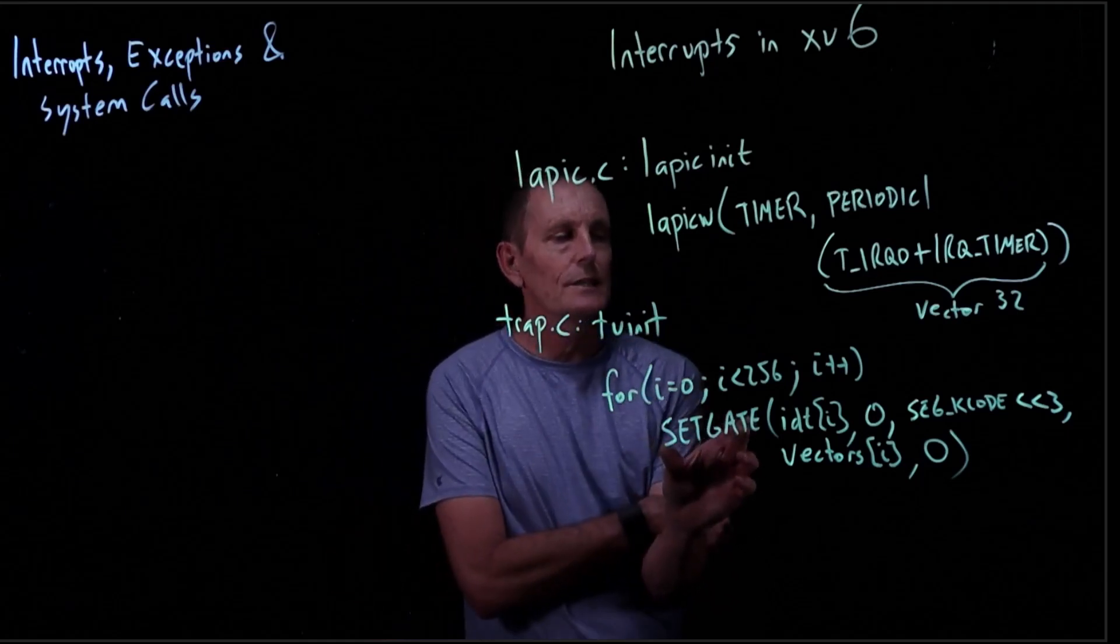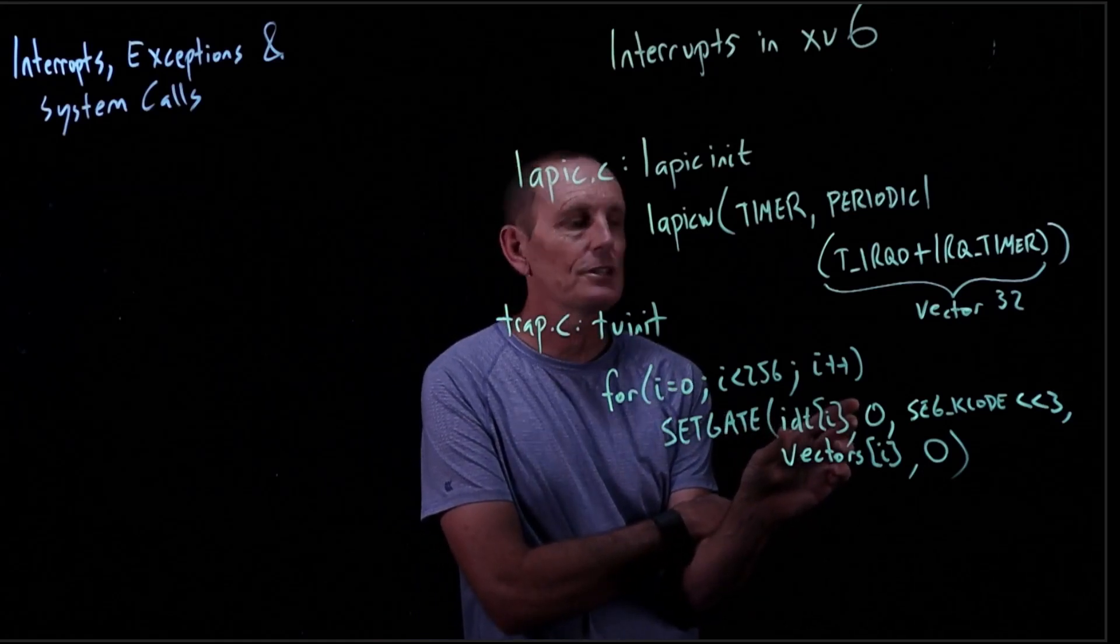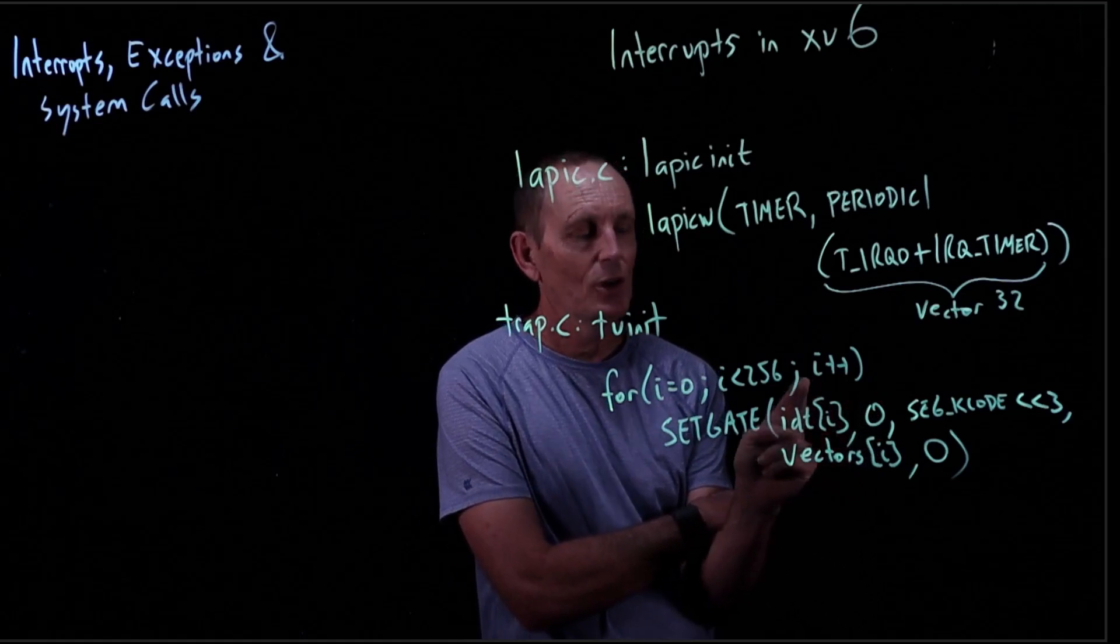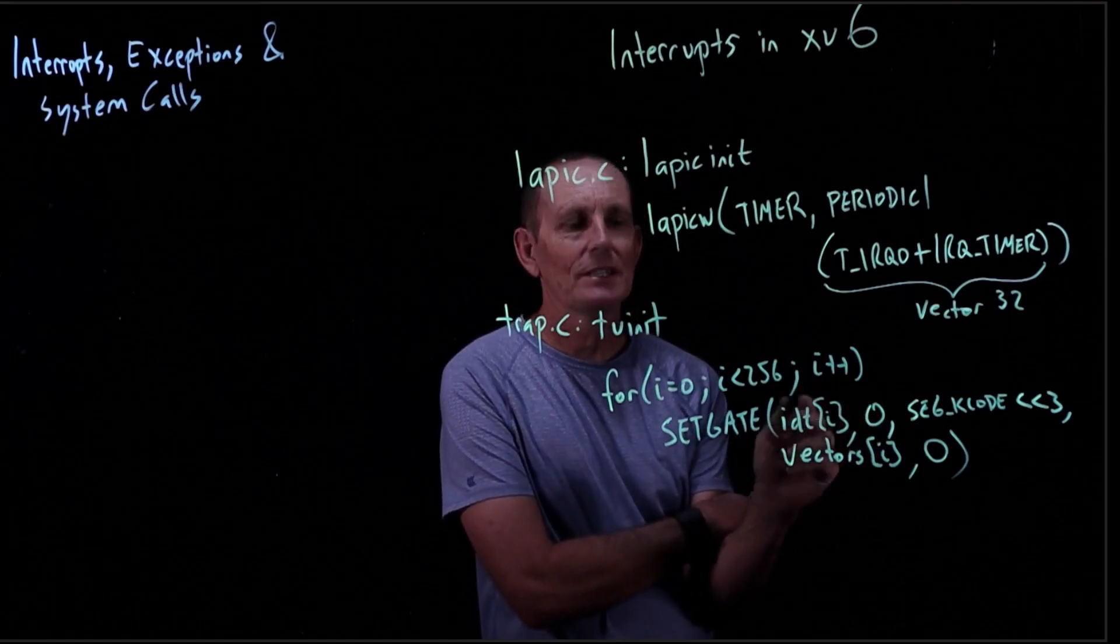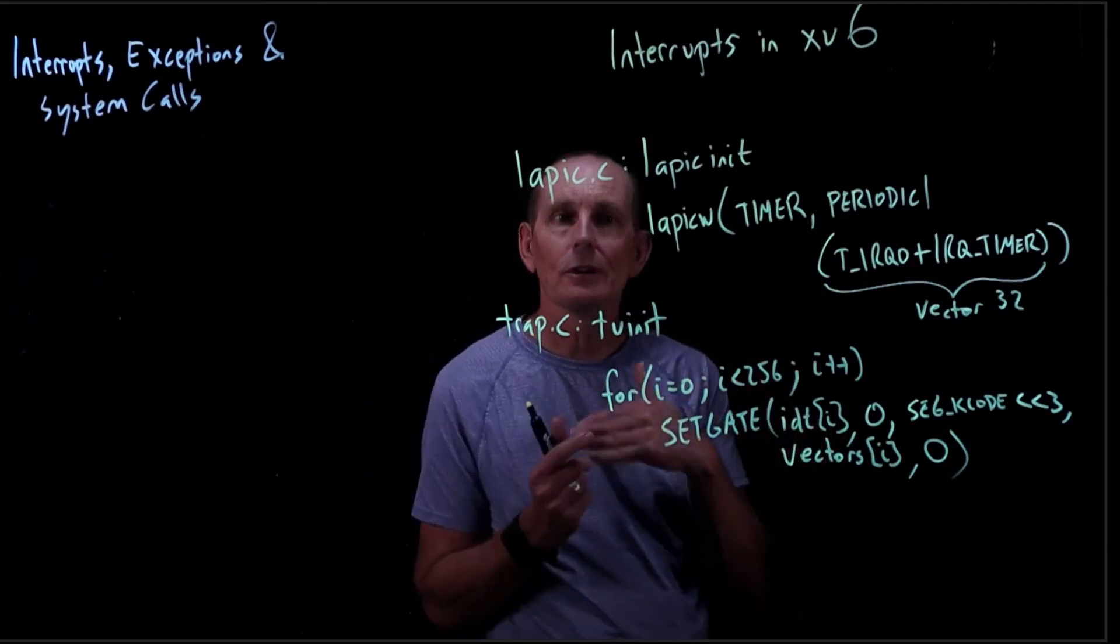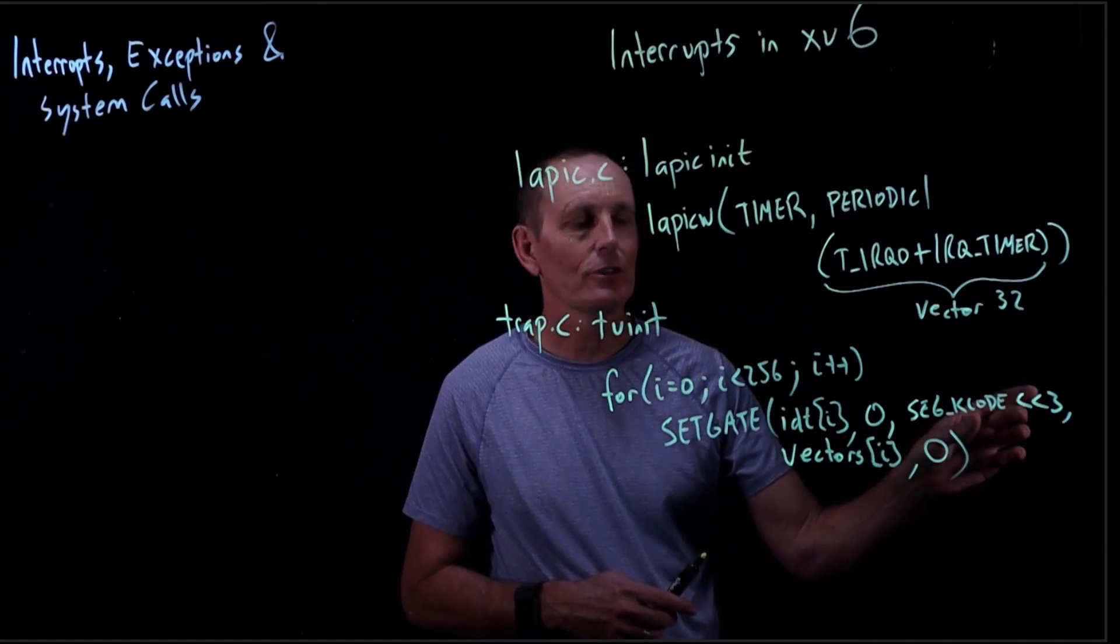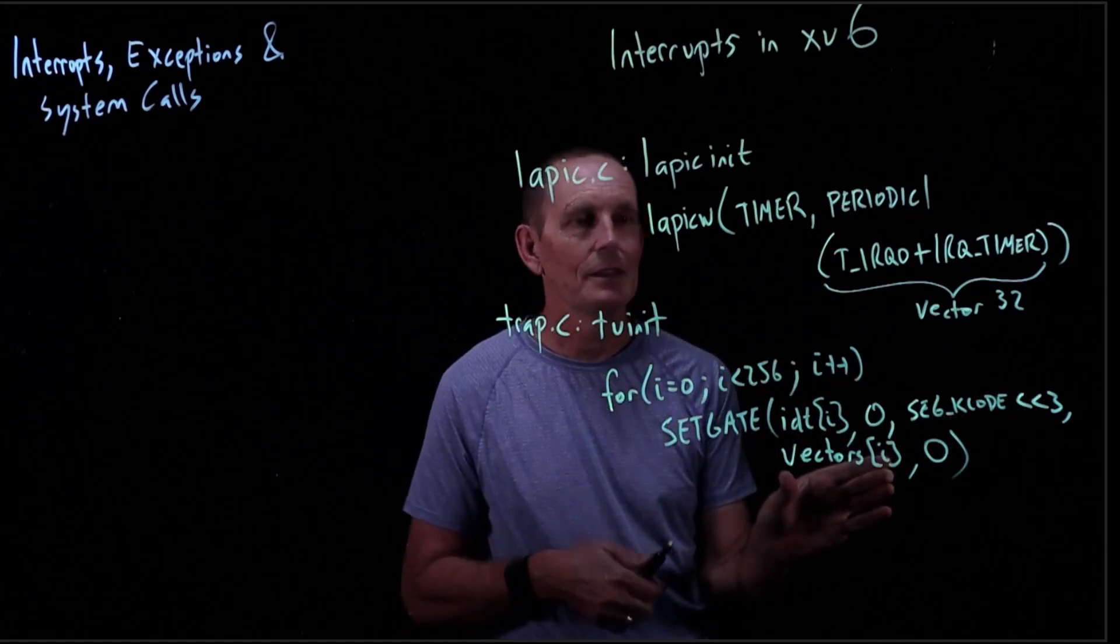So we set it like this. What this does is sets that this is the interrupt descriptor table entry we're interested in. This says we do not allow interrupts to happen while we are handling this interrupt. So this basically says the first 256, we don't allow nested interrupts. This is a segment for the kernel code, because remember, it's a combination of segment and offset. And then this is the offset.